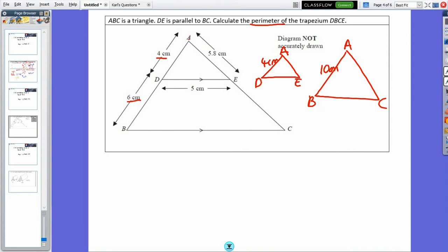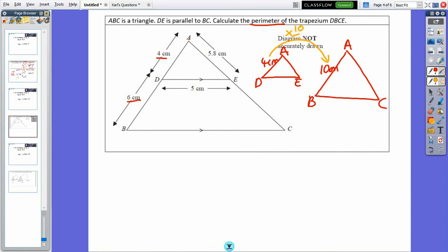My scale factor then to get from 4 to 10, what do I multiply by? I multiply by 10 over 4 and 10 over 4 is the same as 5 over 2 or multiplying by 2.5. So my scale factor is times by 2.5.